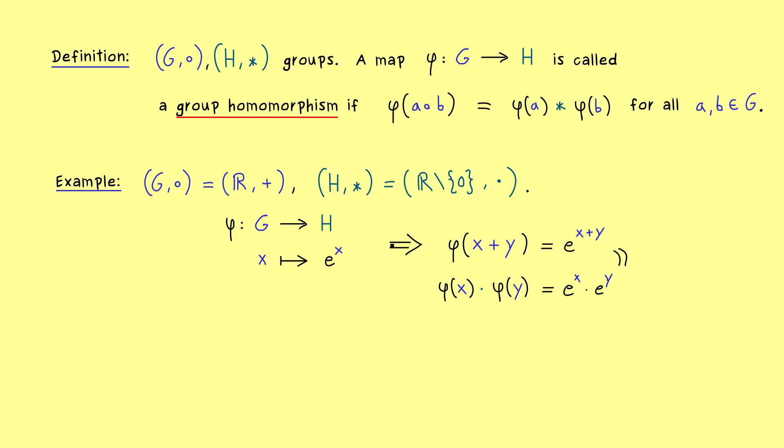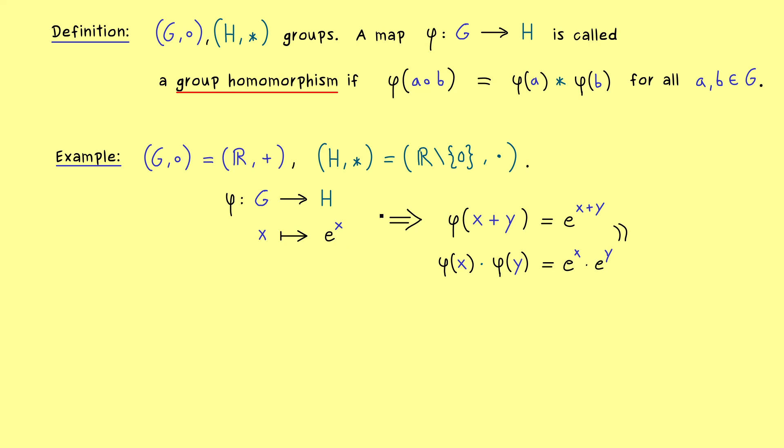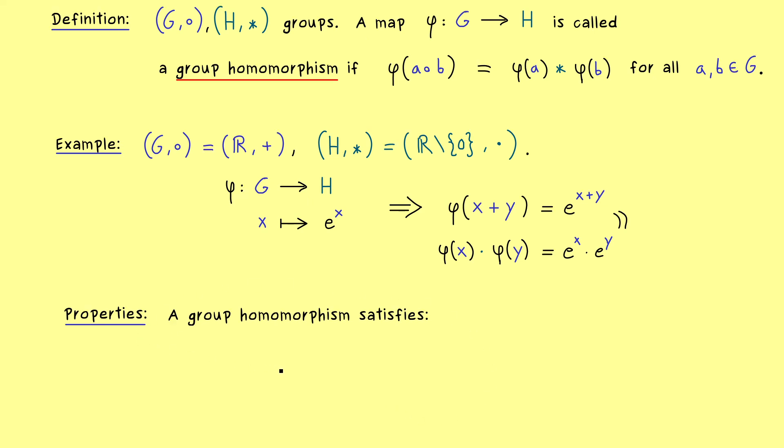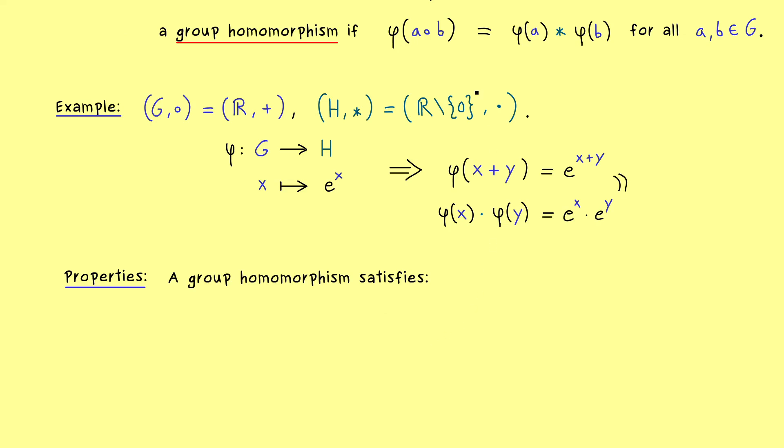So this means, if we don't have surjectivity, we still will describe a whole group embedded in H. Indeed, this is something I want to discuss in more detail really soon. But in order to do that, we first have to prove the two properties a group homomorphism has as well.